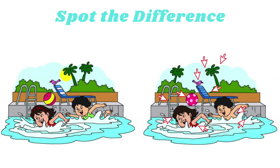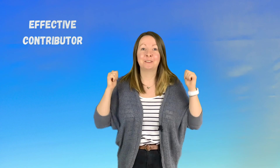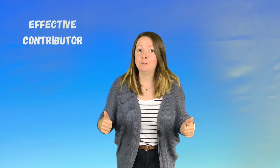How many did you find? We've got the trees, the bird, the chair, the ball, the ladder, the goggles on the girl's head, and the costume on the boy. Well done — that was the third spot the difference! If you got all 10 in all three of them, that is 30 differences you've spotted.